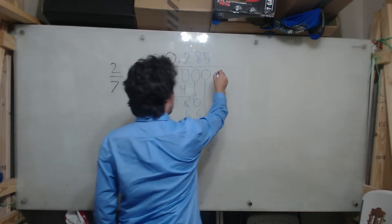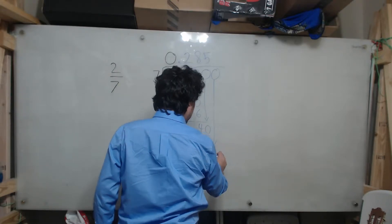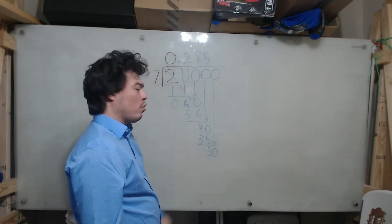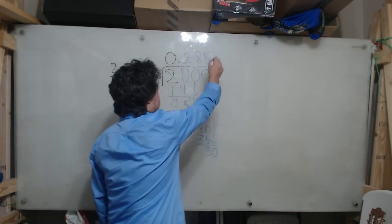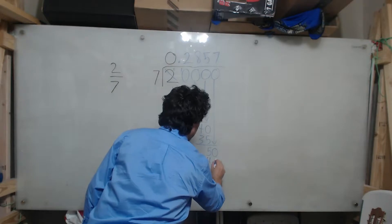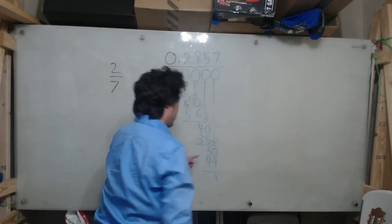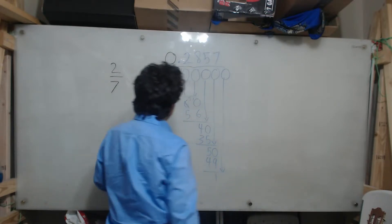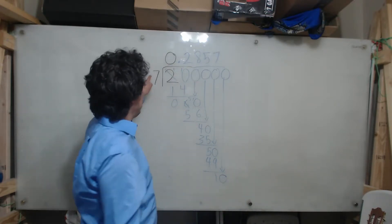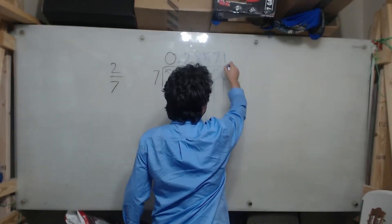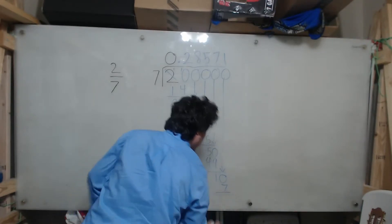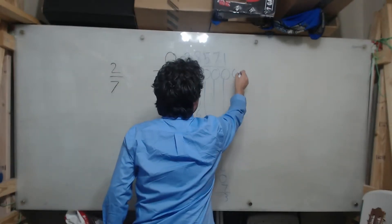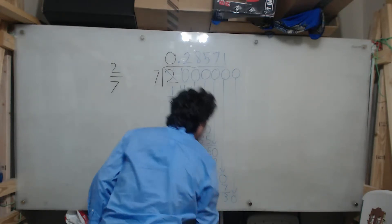Then I affix another 0 here and drop it to get 50. I ask how many times does 7 go into 50? We know that 7 times 7 is 49, so we answer 7. We place the 49 here and perform the subtraction, which gives us 1 — 50 minus 49 is 1. Then I affix a 0, drop it down, and it becomes 10. How many times does 7 go into 10? 1 time — 1 times 7 is 7. 10 minus 7 is 3. I affix another 0, drop it, and get 30.